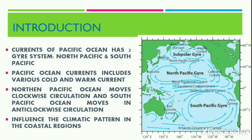Gyres are large rotating current systems in the ocean. The motion of the gyre is determined by the direction of the prevailing winds and the influence of the Coriolis effect. The Pacific Ocean currents consist of both warm ocean currents and cold currents. The North Pacific Ocean current moves in clockwise circulation while the South Pacific currents move in anti-clockwise direction. Both these currents influence the climatic pattern in the coastal regions of the Americas, Asia, and Australia.